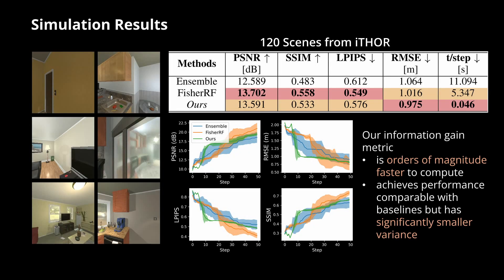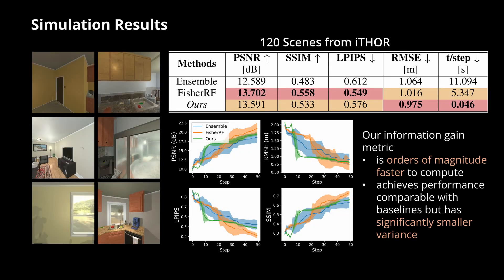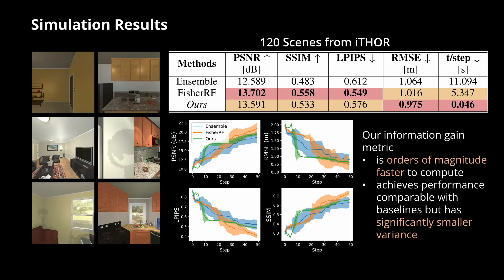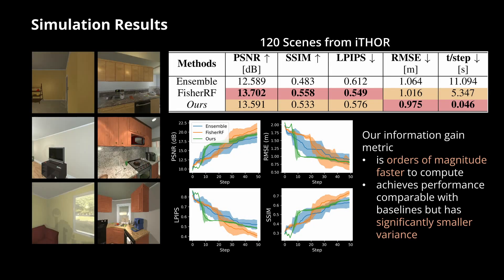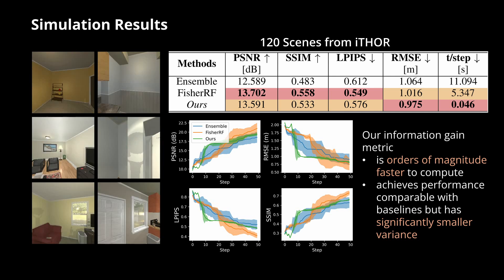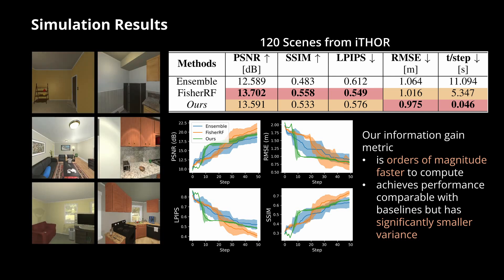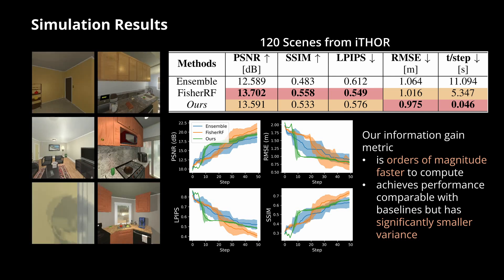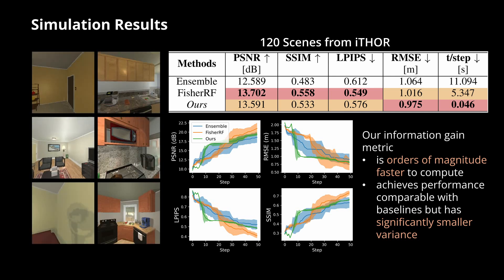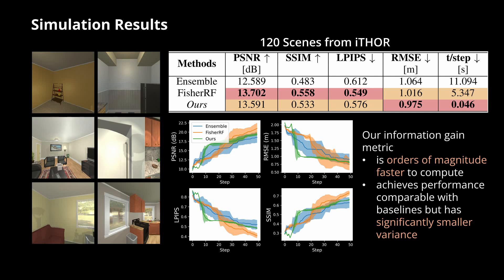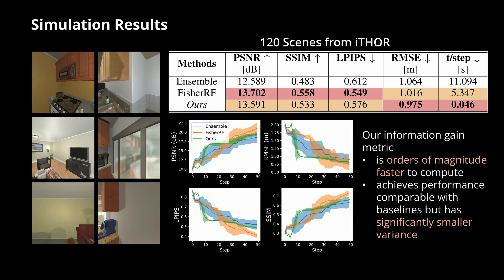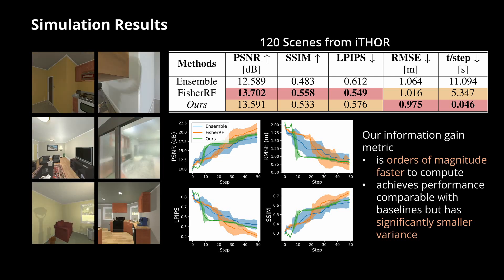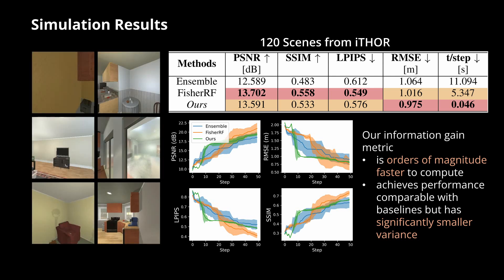We conduct extensive simulations in the AI2TOR simulator on 120 scenes from the ITOR dataset. Our information gain metric is over 100 times faster to compute and achieves comparable performance to baselines while having significantly smaller variants.